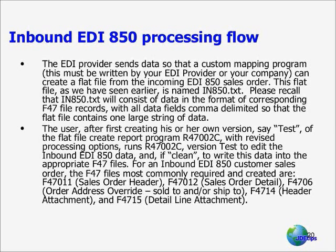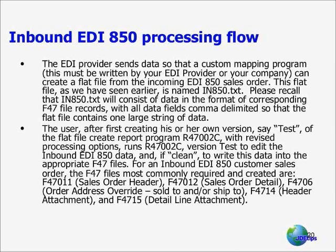Just reviewing then, the EDI provider sends data so that a custom mapping program, which is either written by your EDI provider or yourself, can create a flat file from incoming EDI sales orders. This flat file, as we've seen earlier, is named in850.txt, and it will consist of data in the format corresponding to F47 file record layouts, with all data fields comma-delimited, so that the flat file contains one large string of data regardless of the number of transactions coming in. It's one long string, comma-delimited.